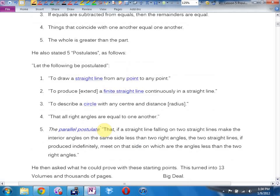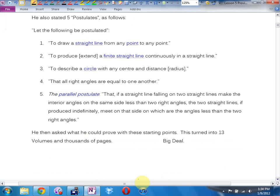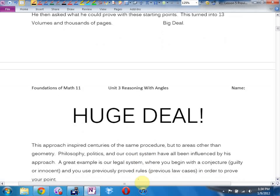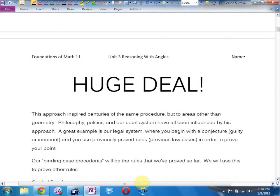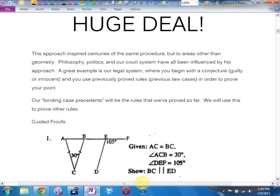Then he gave what he called his five postulates, and these are fairly famous among math nerds. He said, let the following be postulated. These are the five taken directly from the Greek into the Old English. It's kind of weird to read. And from those five common notions, and from those five postulates, turned into 13 volumes and thousands of pages. He asked, what can I prove starting with those? Big deal. Huge deal! It is.